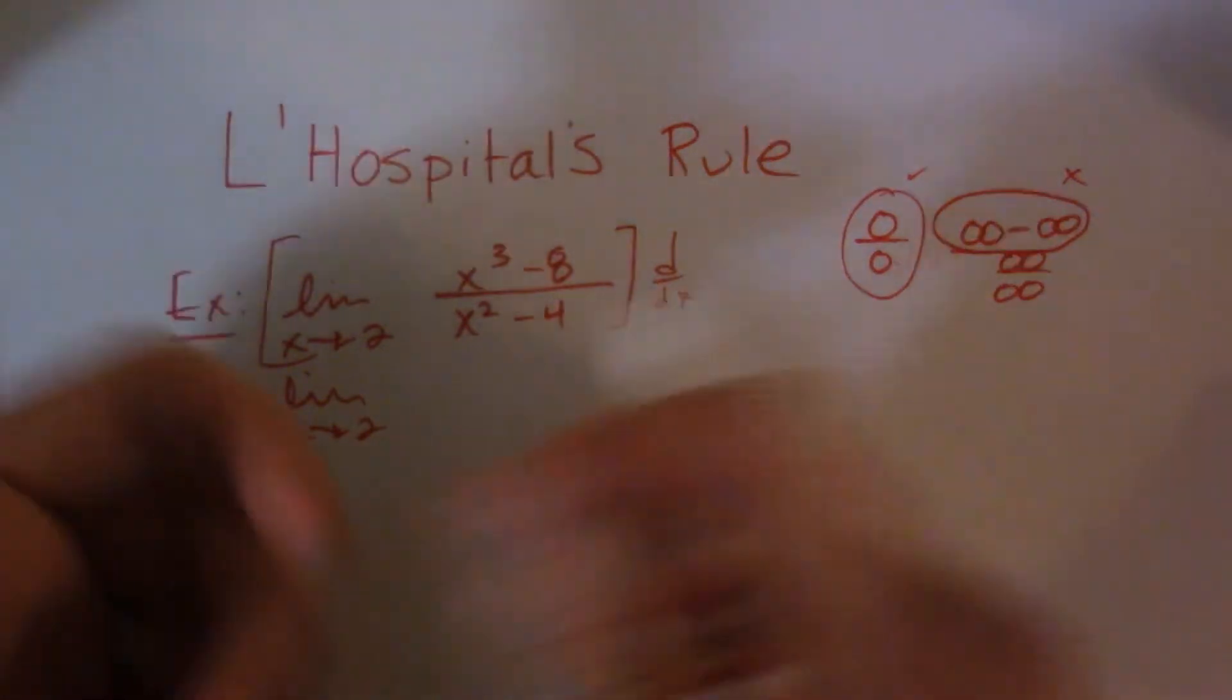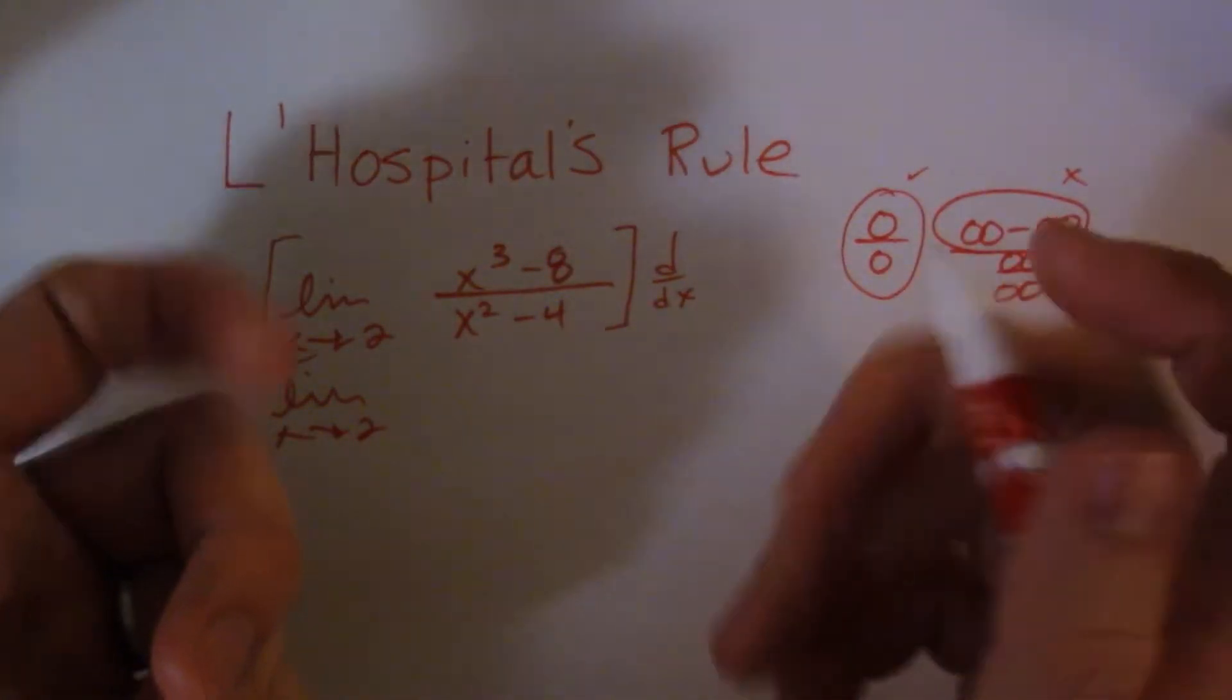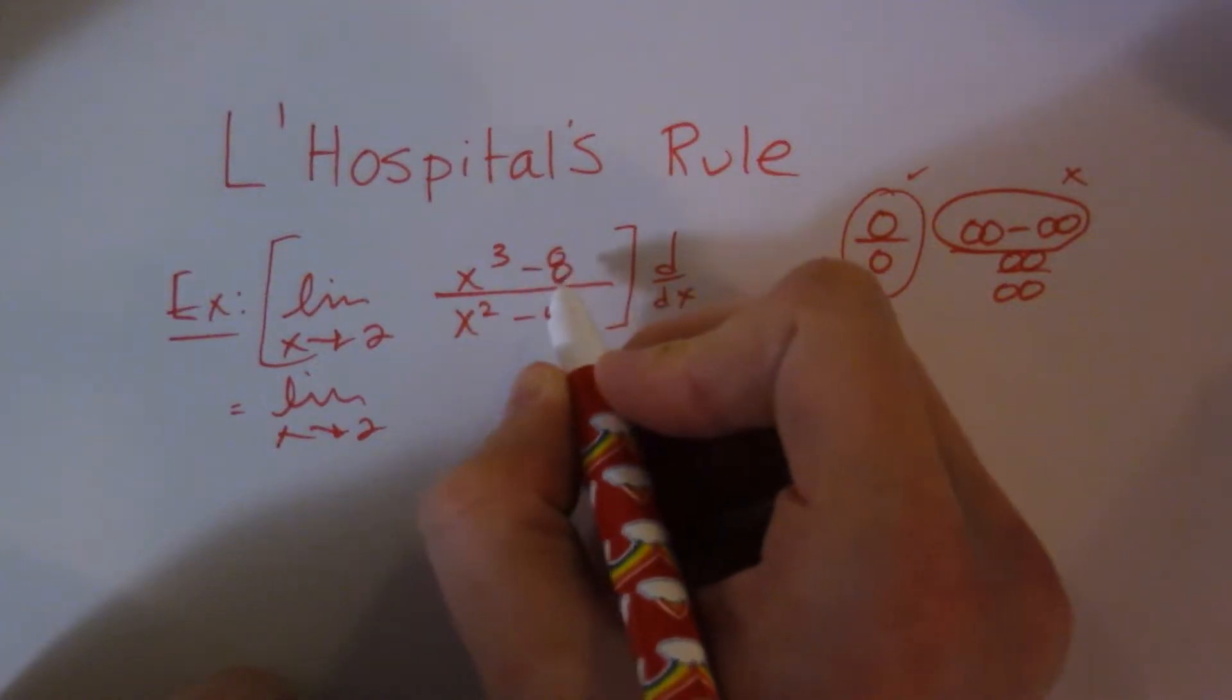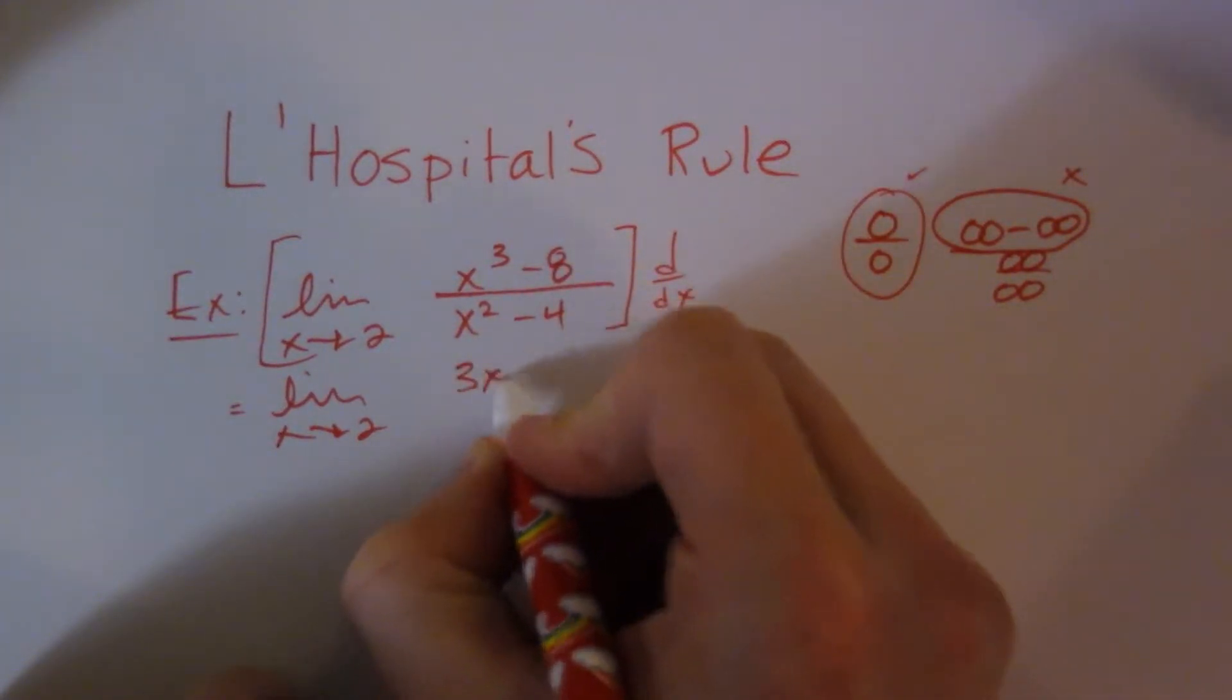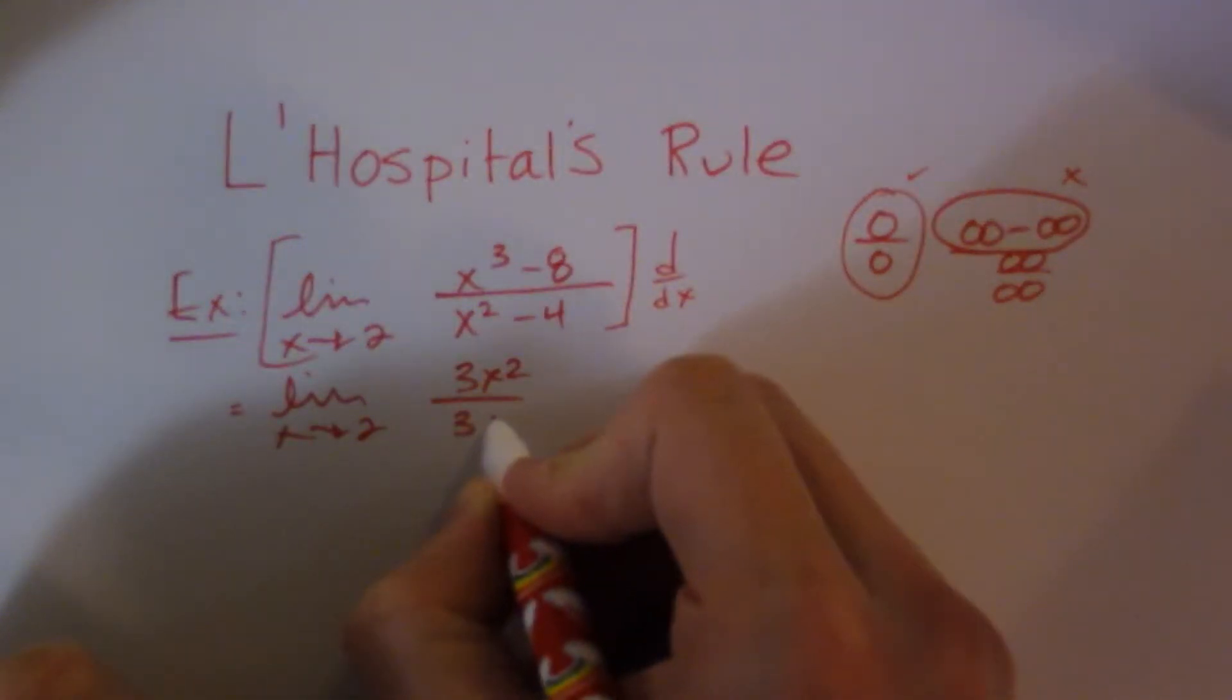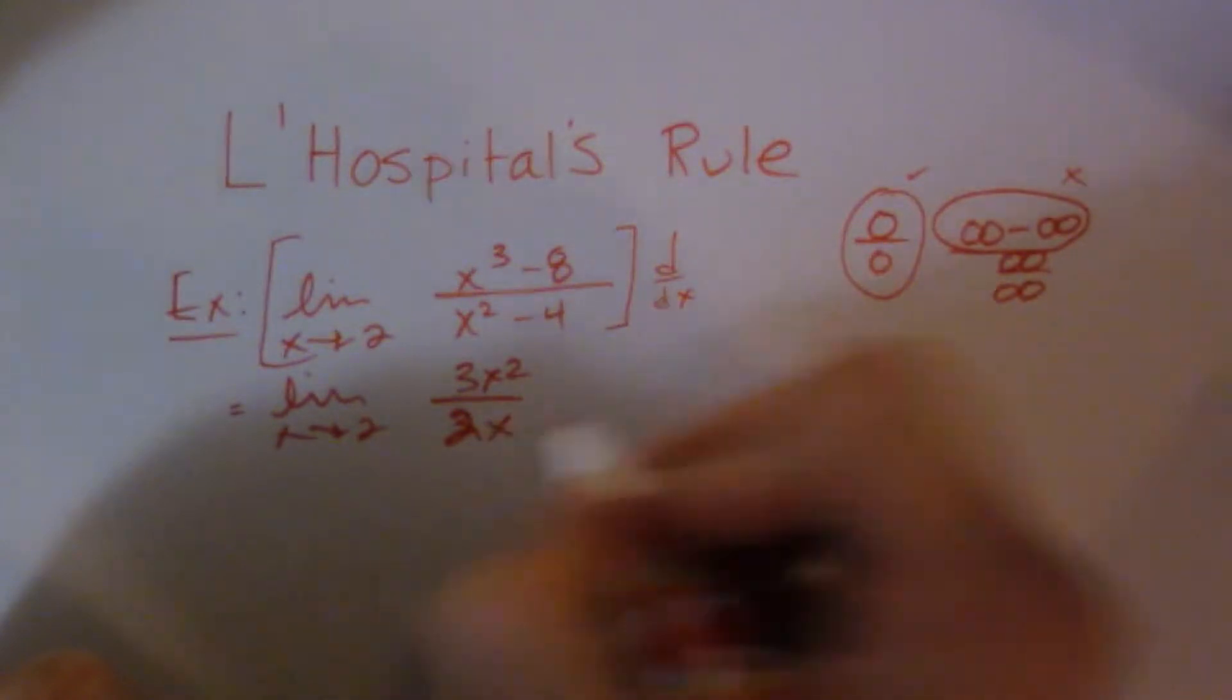So the derivative of x cubed minus 8 is 3x squared. The derivative of this guy on the bottom is just 2x.